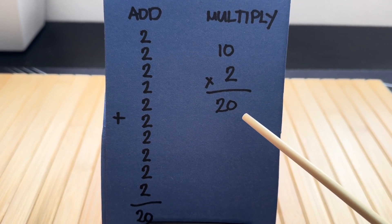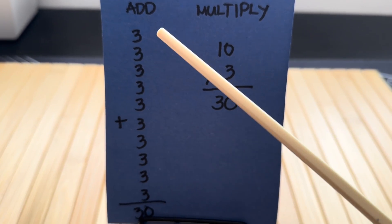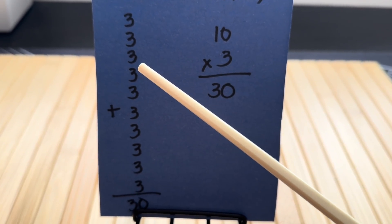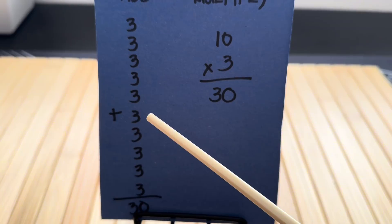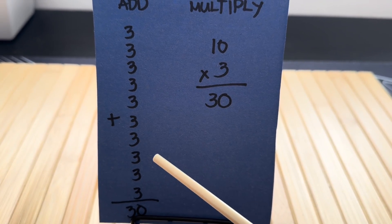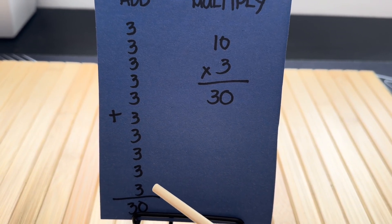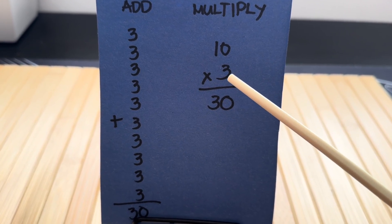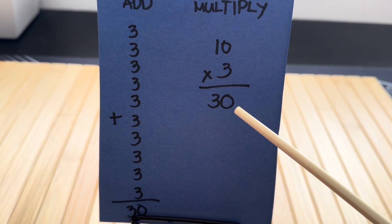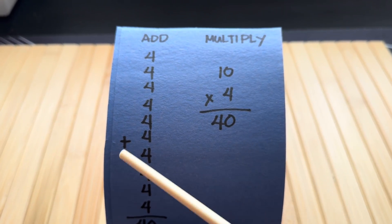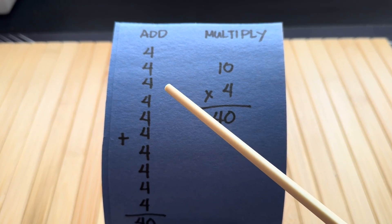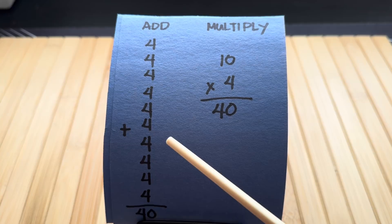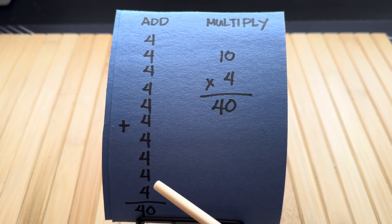Here's another one: 3 plus 3 plus 3 plus 3 plus 3 plus 3 plus 3 plus 3 plus 3 plus 3 is equals to 30. Next: 4 plus 4 plus 4 plus 4 plus 4 plus 4 plus 4 plus 4 plus 4 plus 4 is equals to 40.